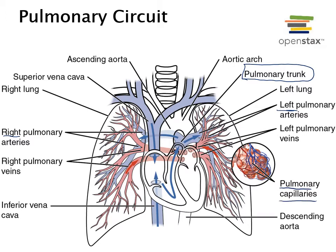Within the pulmonary capillaries, oxygen diffuses from the air inside the alveoli — the air sacs of the lungs — into the blood within the pulmonary capillaries. The oxygen-rich blood from the pulmonary capillaries then flows through venules into pulmonary veins. The left pulmonary veins carry blood from the left lung into the left atrium, and the right pulmonary veins carry blood from the right lung into the left atrium.